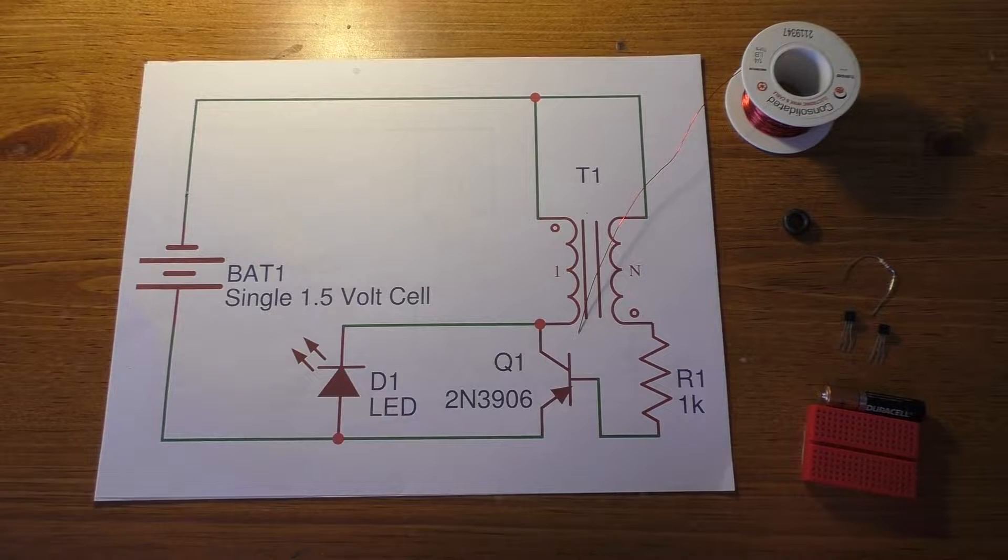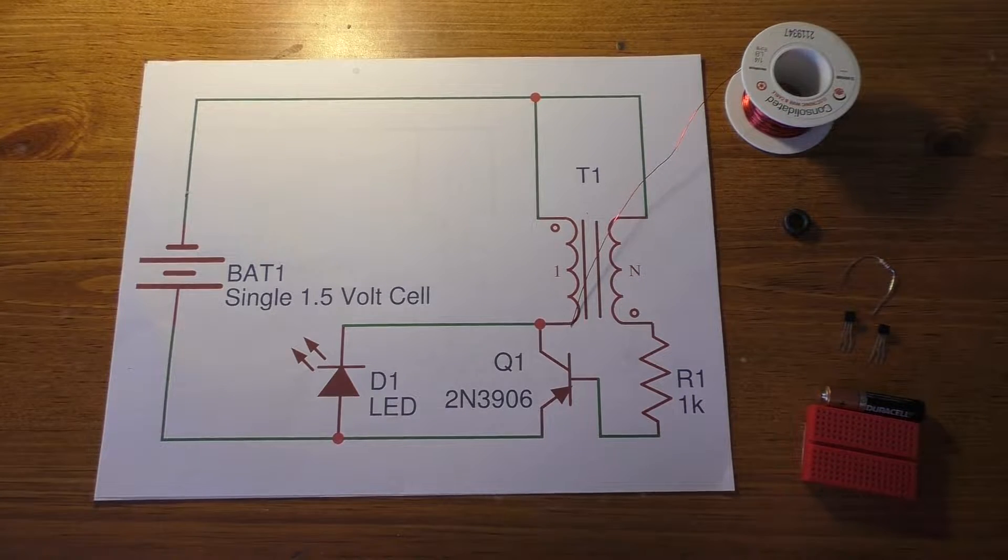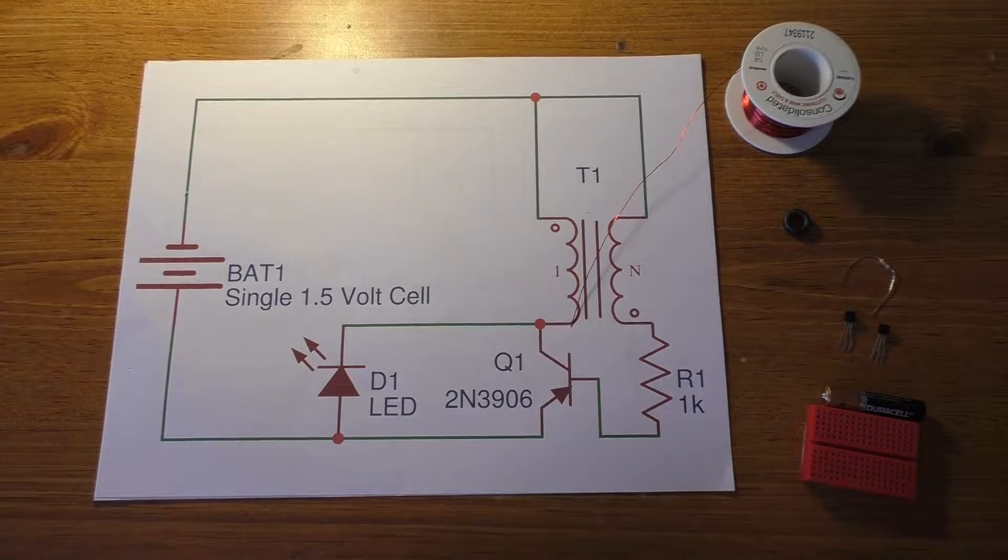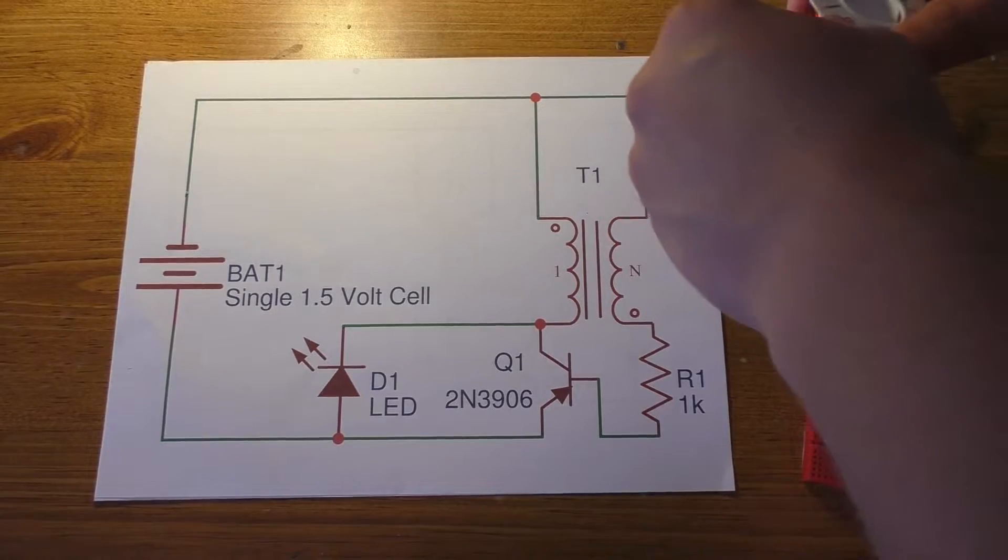You're going to kind of have to judge the amount of wire you need for yourself because it's going to depend on your toroid. If you have a bigger toroid, it's going to take more wire. If you have a smaller one, it's not going to take nearly as much wire.